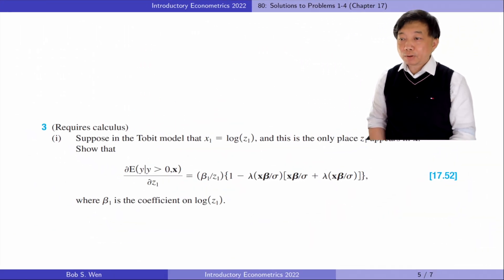Let's find answers to problem three. In part one, suppose that in the Tobit model that x₁ equals log(z₁), and this is the only place z₁ appears in x. Show the following equation.